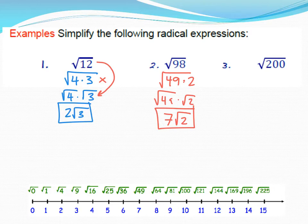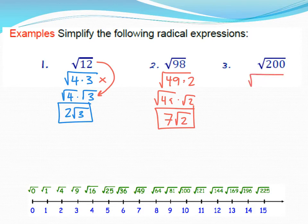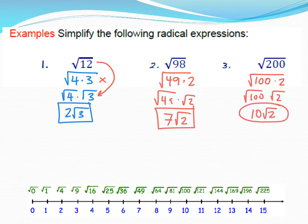Next: √200. On the number line it's between 14 and 15 squared. Work my way down: 196 doesn't go in. But 100 goes into 200! So 200 = 100 × 2. Split: √100 × √2. The square root of 100 is 10. That gives 10√2.